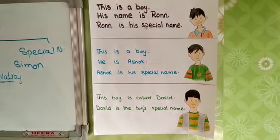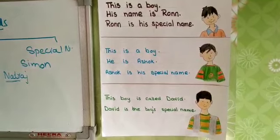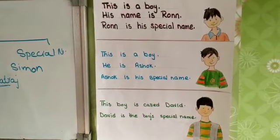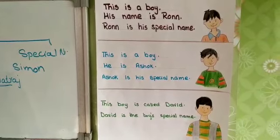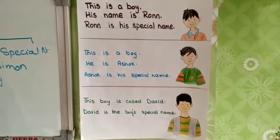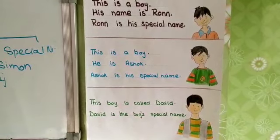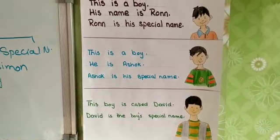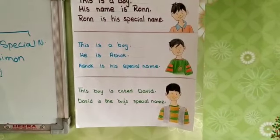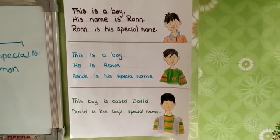Similarly, words like girl, uncle, doctor, student, classmates — these are all common names. For girls, the common name is girl, and the special name can be Cheryl. Man can be Ajay or Pradeep. Doctor — the special name can be Mr. Gupta. So all these are the special names.